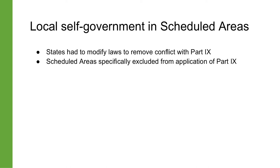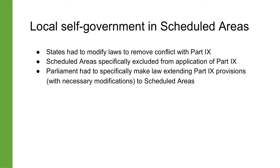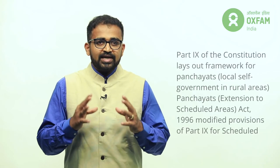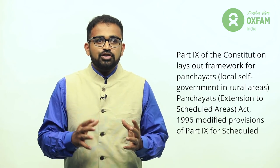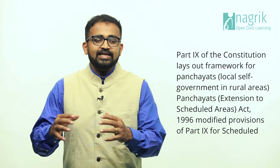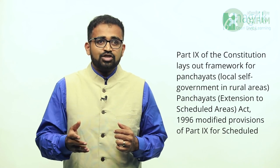Some parts of the country were specifically excluded from the application of Part 9's provisions and would not apply to Scheduled Areas until parliament specifically made a law extending these provisions with necessary modifications. The Panchayats Extension to Scheduled Areas Act 1996, or PESA, was the law made by parliament for this purpose. It extended the provisions of Part 9 to Scheduled Areas and the nine states that contained these areas: Andhra Pradesh, Chhattisgarh, Gujarat, Himachal Pradesh, Jharkhand, Madhya Pradesh, Maharashtra, Orissa, and Rajasthan. These states were to enact laws to comply with Part 9 read with PESA.